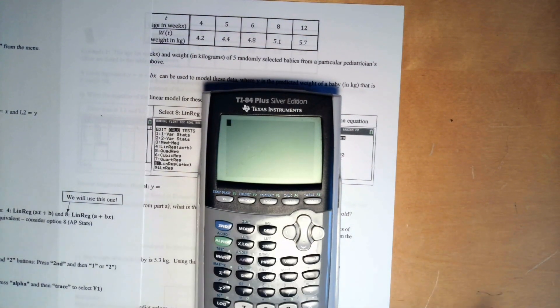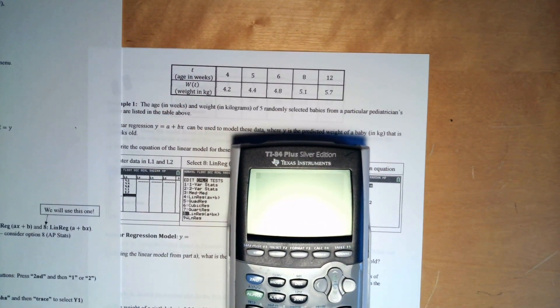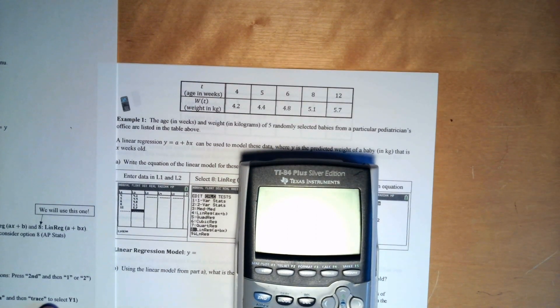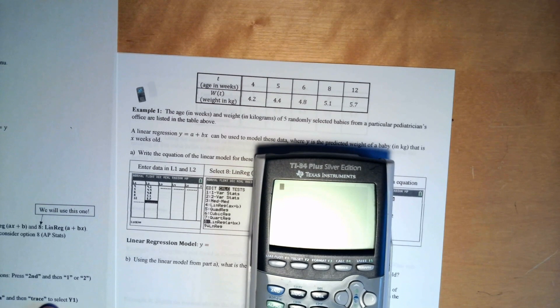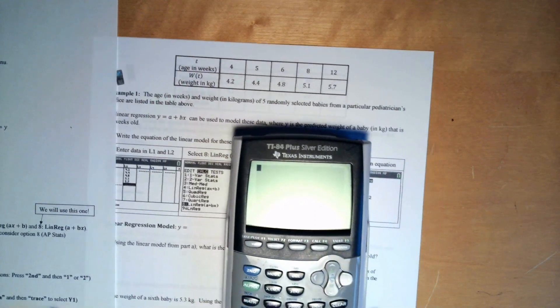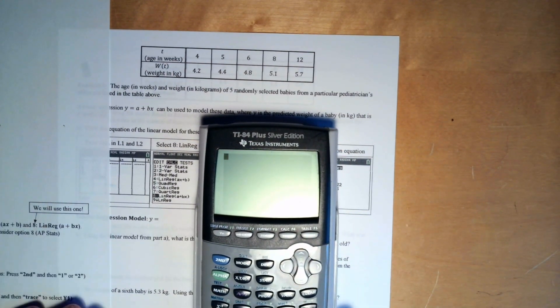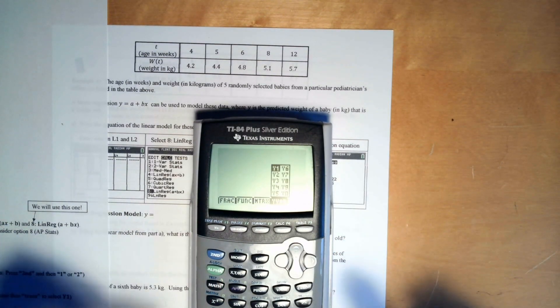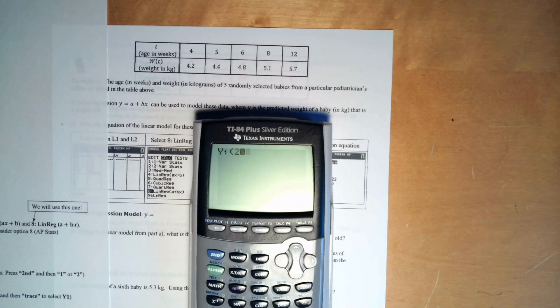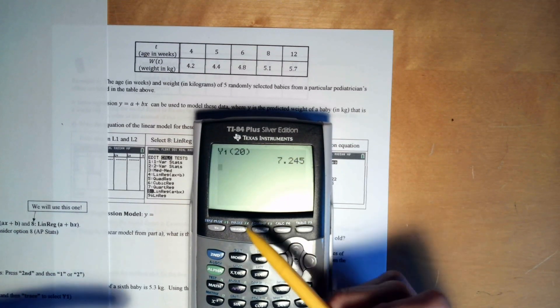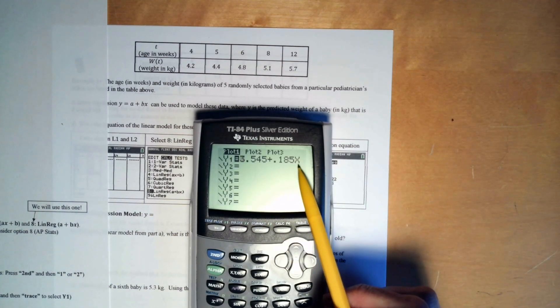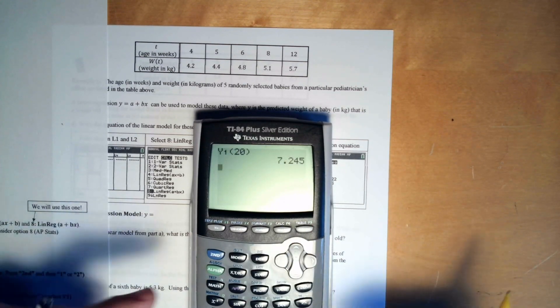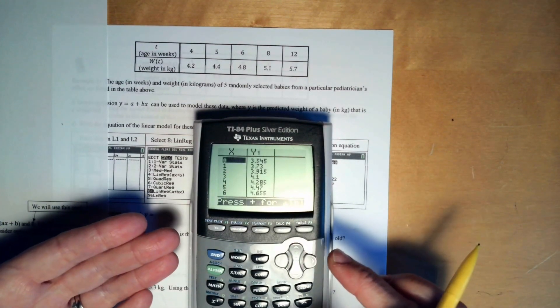So now because we stored that in y1, this data was for like the age of what is it, babies. The age in weeks and weight of randomly selected babies from a particular pediatrician's office. So let's say I want to know, like based on this data, let's go ahead and figure out what's the baby when they're 20 weeks old or something. So alpha trace because I want to plug 20 into y1 parentheses and plug in 20. So it's going to plug 20 into this problem, so it puts a 20 right there without me having to do it.